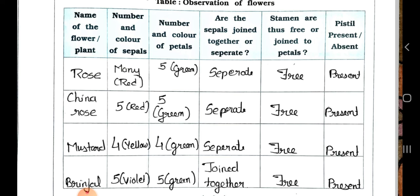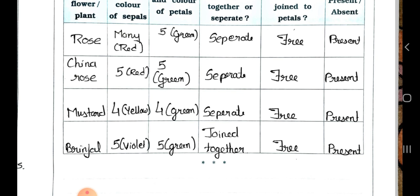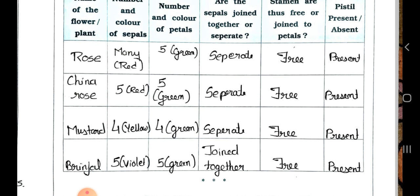For rose: sepals are separate, stamens are free, and pistil is present. Now another flower: China rose. Sepals are five and red in color, petals are five and green in color, sepals are separate, stamens are free, and pistil is present. Now see mustard: sepals are green, petals are four and yellow in color, sepals are separate, stamens are free.